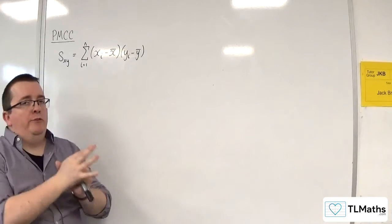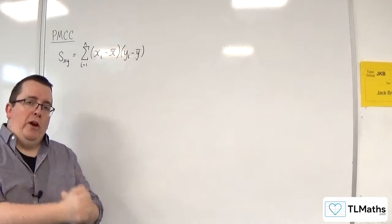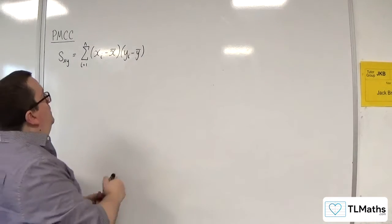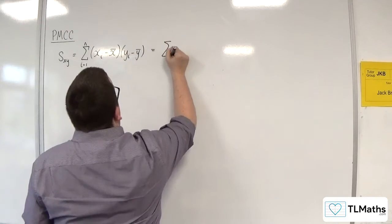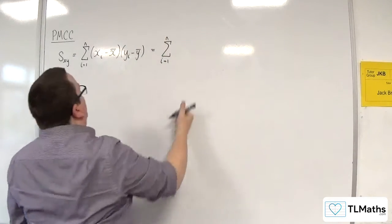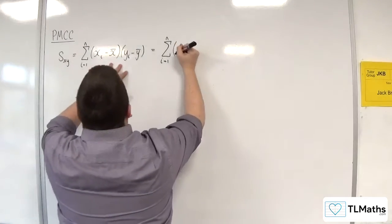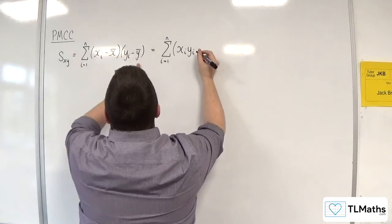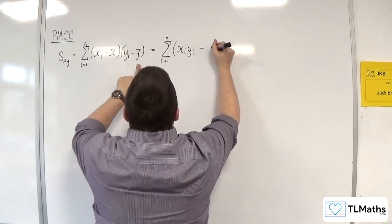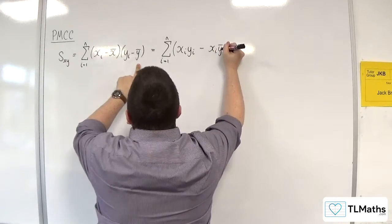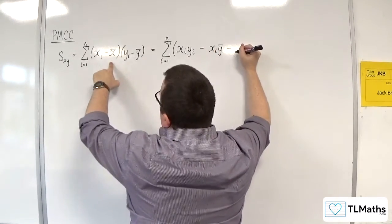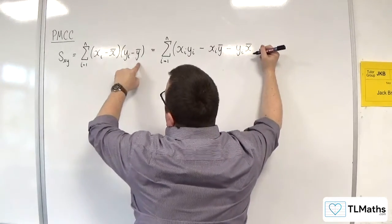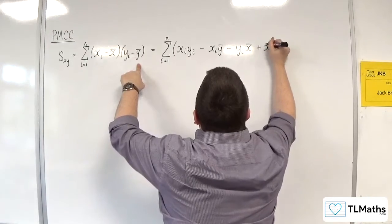What we want to do is write this in an alternative form, which is going to allow us to use the summary statistics. I'm going to expand the double brackets to start off with. So from i=1 to n, expanding out we have: x_i·y_i, minus x_i·ȳ, minus x̄·y_i, plus x̄·ȳ.